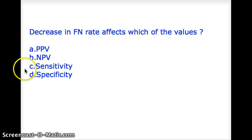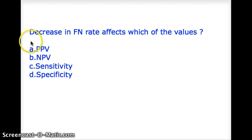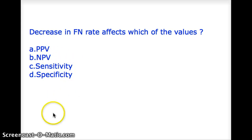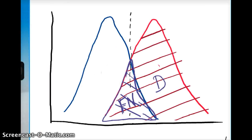This video talks about this particular question from Biostat, which says that a decrease in false negative rate affects which of the following values: positive predictive value, negative predictive value, sensitivity, or specificity? Let's take a quick look at a graph which deals with all these.